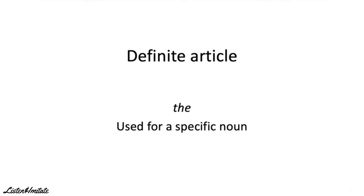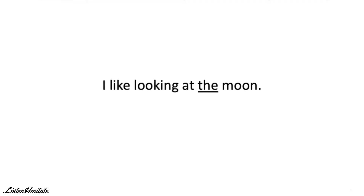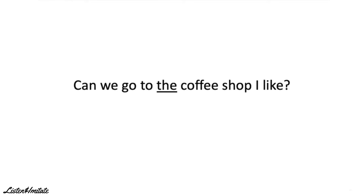Let's have a closer look. The definite article 'the' is used to refer to a specific person or thing. For example: I like looking at the moon — moon is specific, there is only one. Can we go to the coffee shop I like? We don't mean any coffee shop; we mean a specific one.